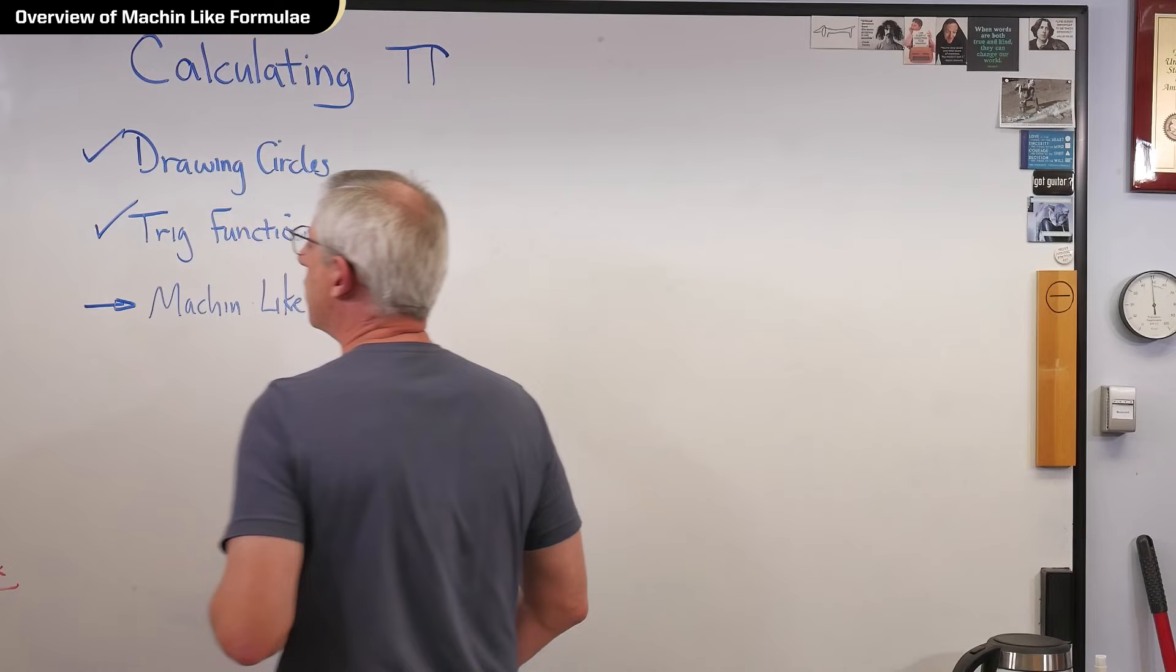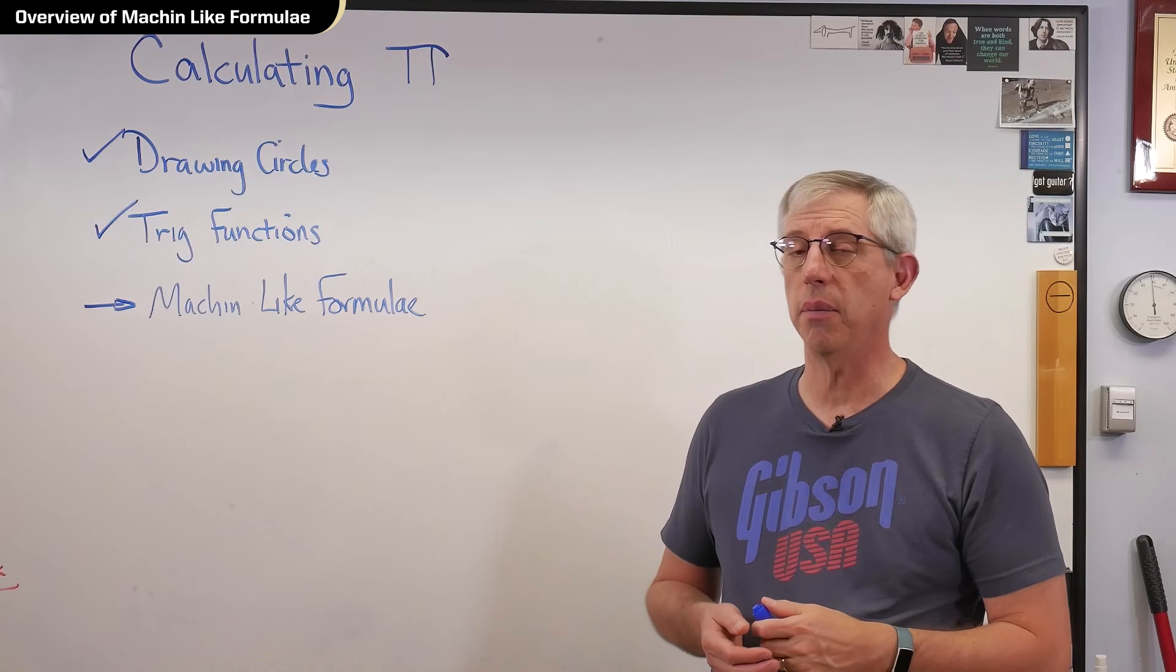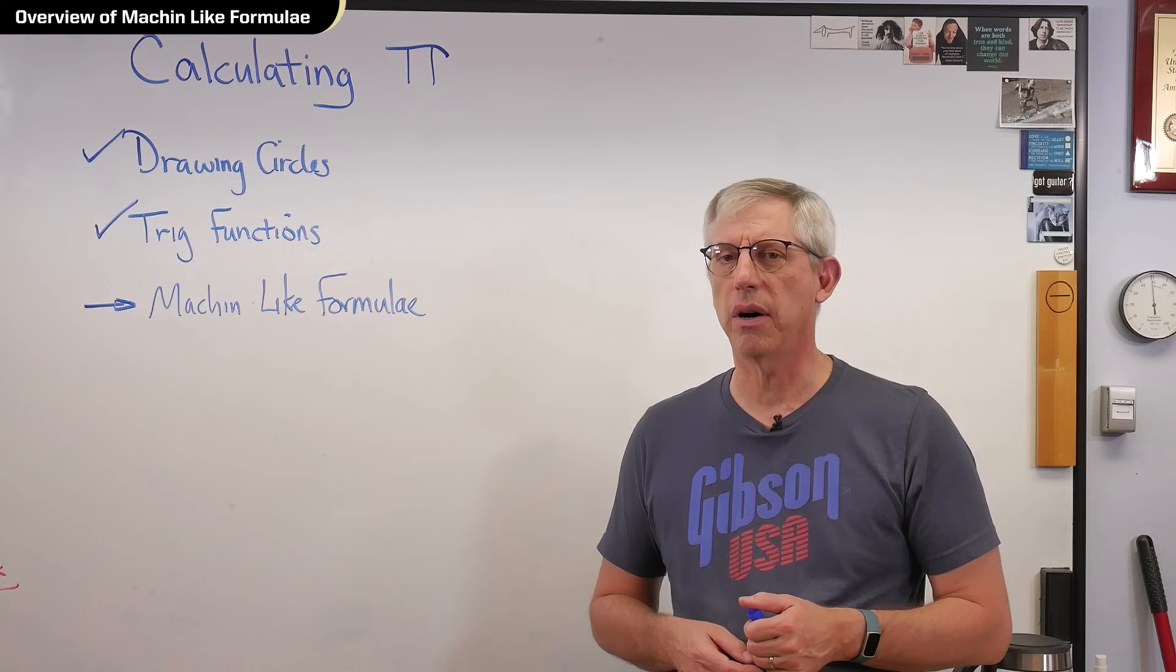Now we're to Machin-like formula. Now I could have thought about this for a long time, and I wouldn't have come up with this. So this is, for my way of thinking, this is a bit of an insight. Now John Machin was a contemporary of Newton, and he published his formula in 1706. So this is not new. It's been around for a long time. And when you think of how much hand calculation this involved, it's pretty impressive.